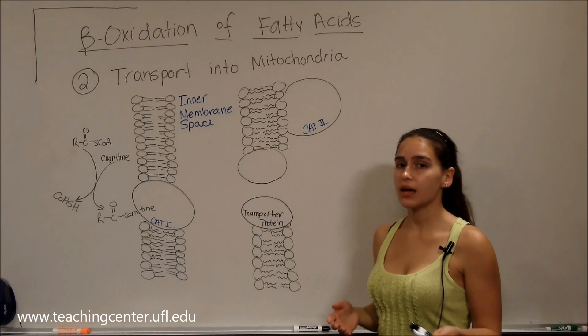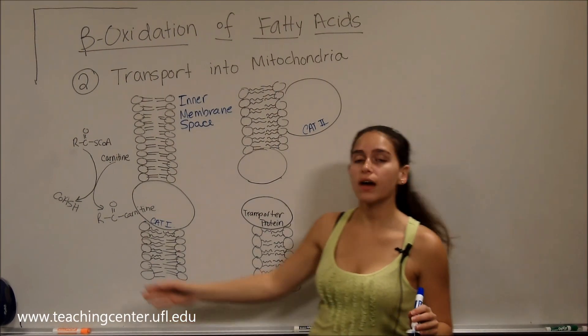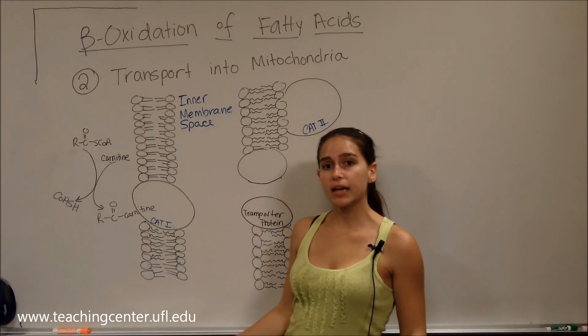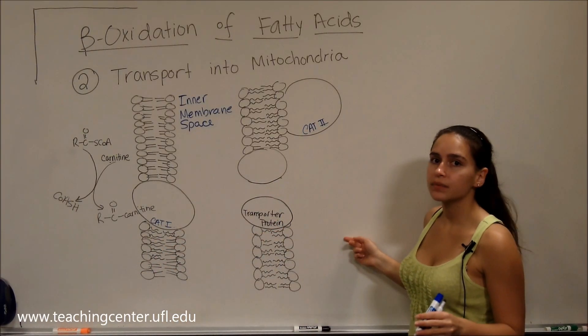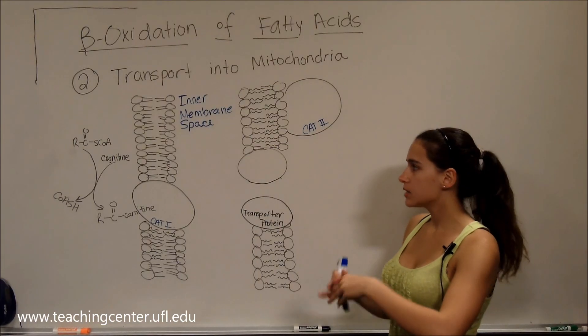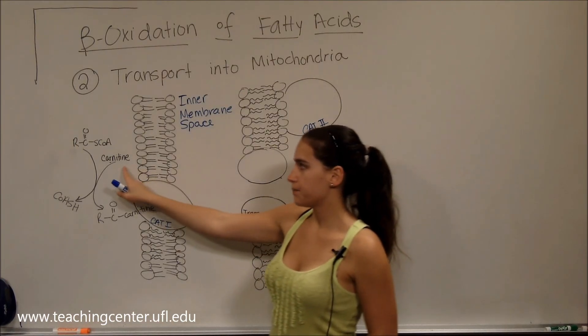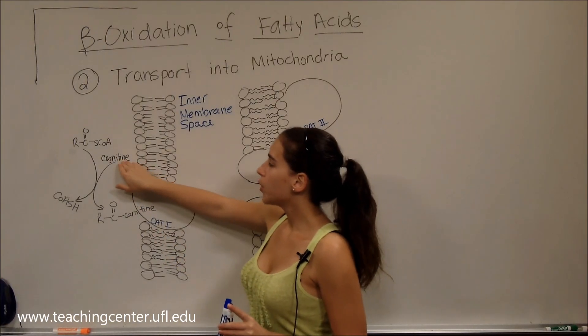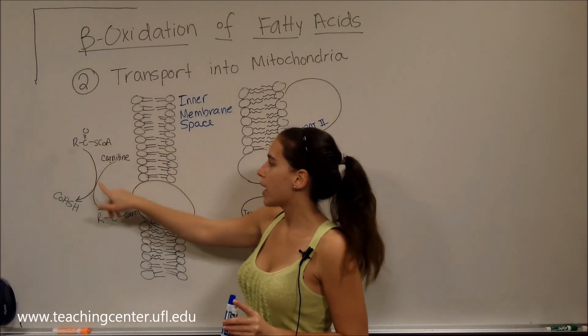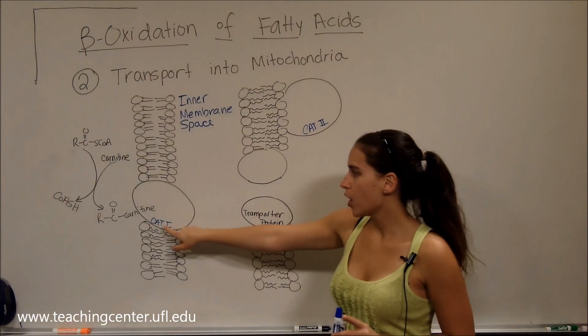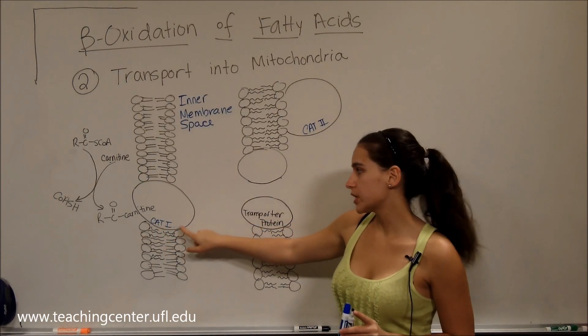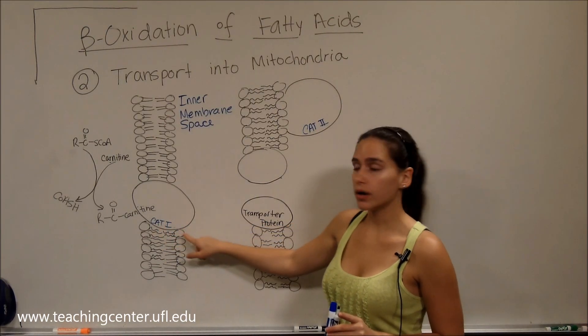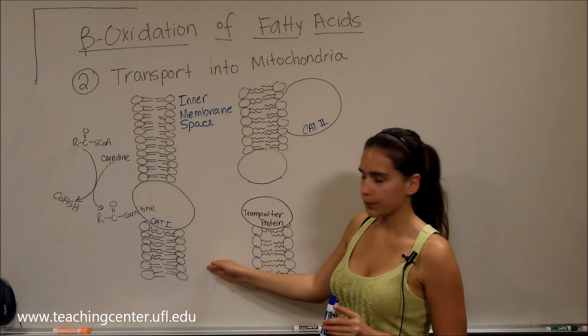The next step in beta oxidation is to transfer the fatty acyl CoA from the cytosol into the mitochondria. However, we need a little helper, and this little helper is going to be carnitine. Carnitine is going to be put onto the fatty acyl CoA by the action of carnitine acyltransferase 1, or CAT1, which is in the outer membrane of the mitochondria.